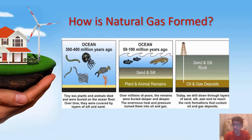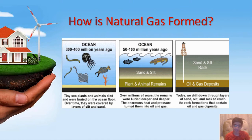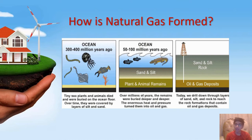Now we will talk about how natural gas forms. The process of formation of natural gas and oil is the same. Tiny plants and animals lived in the sea 300 to 400 million years ago, and when they died, their remains got buried under sand, silt, and rock. Over time, this produced a lot of heat and pressure on the remains, which created oil and gas reserves under the earth.